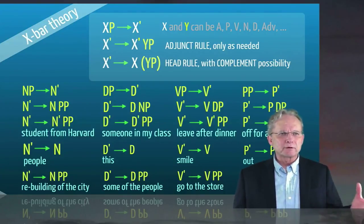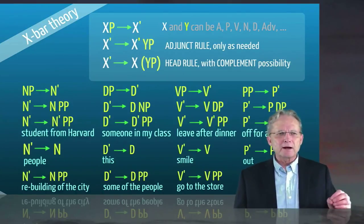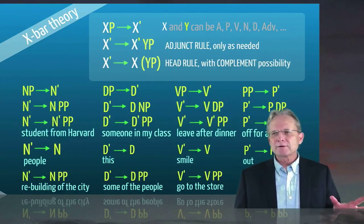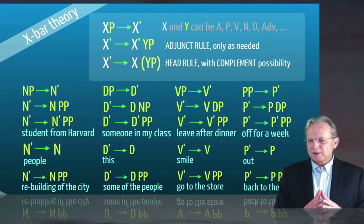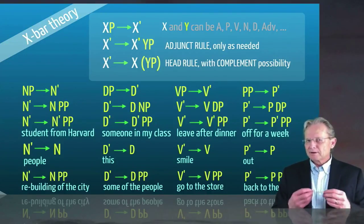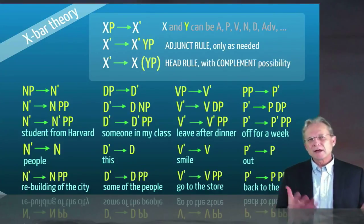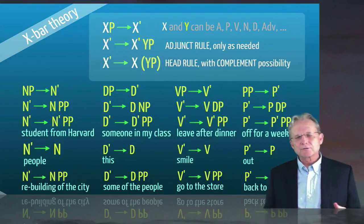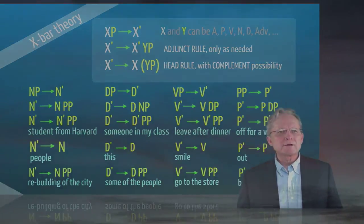So this is what we call X bar theory, it's called X bar theory, because X stands for all of the different categories, adjective, noun, preposition, verb, and all of those categories can be heads, and phrases projected from them. And those phrases have the same basic schematic structure across the whole range of categories.